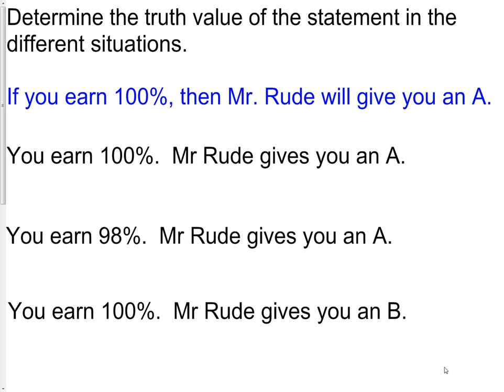Here's another example to determine the truth value of a statement in some different situations. These can be a little bit tricky, so you may want to re-watch this a time or two. Our original statement is: If you earn 100%, then Mr. Rude will give you an A.